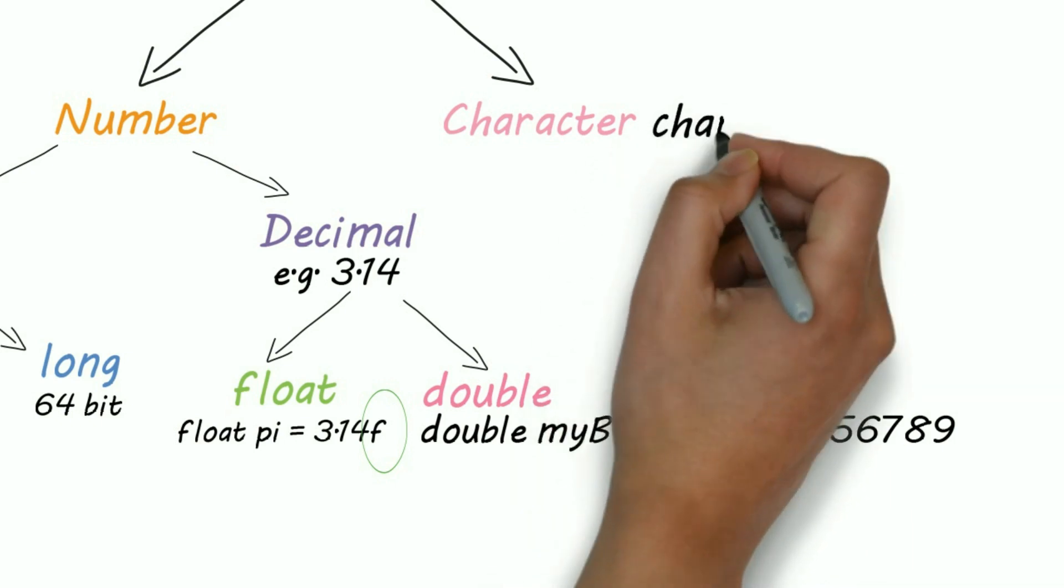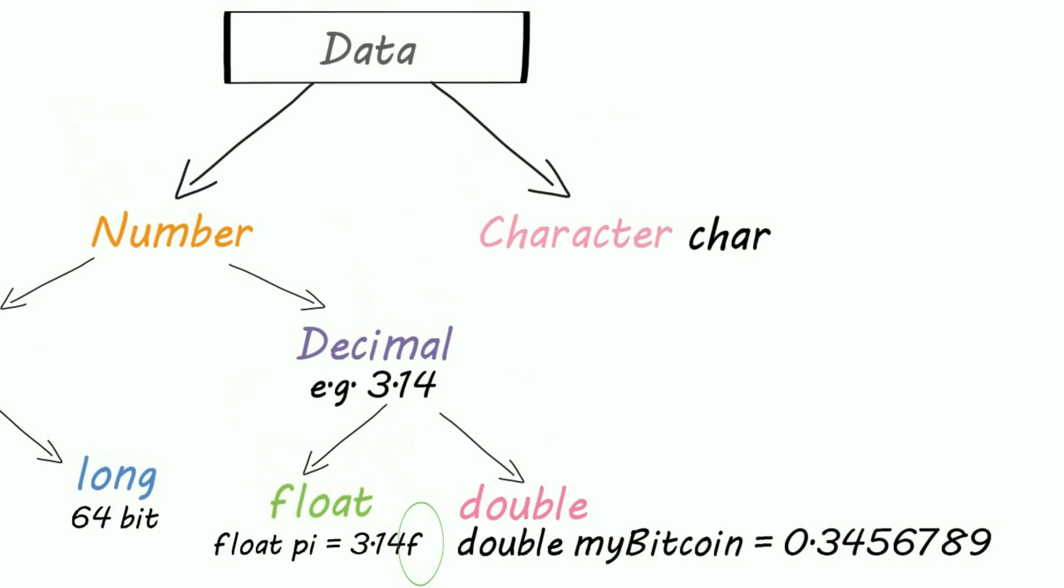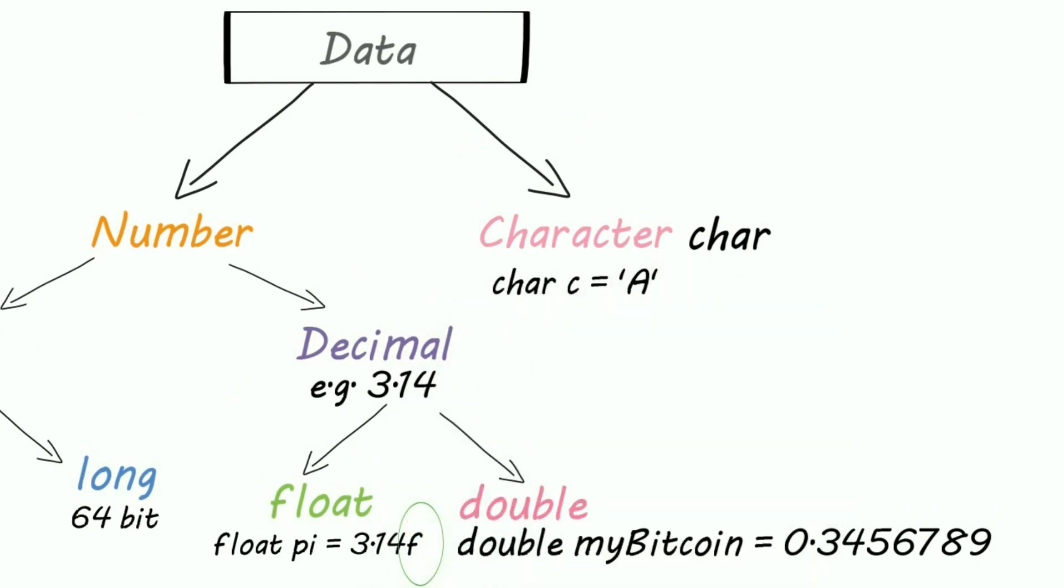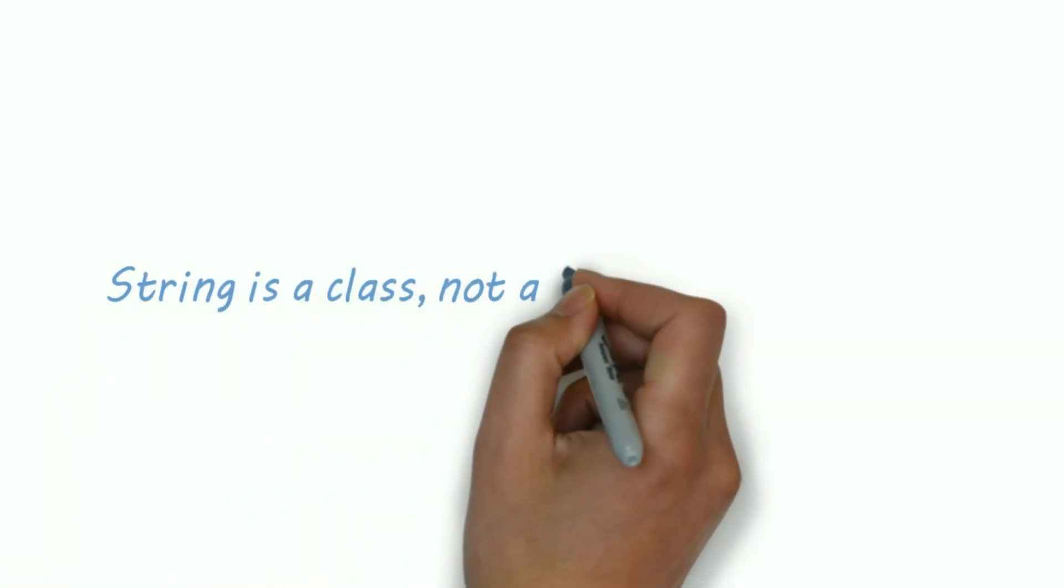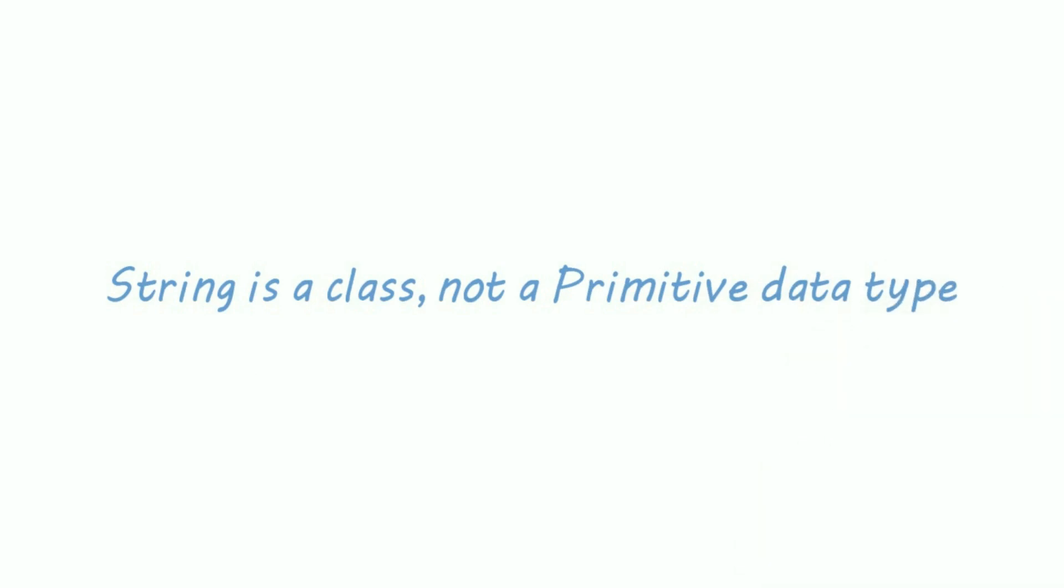Now, for storing characters, we only have char. For example, char c equals a. In Java, string is a class, not a primitive data type. I have created a separate video on string.